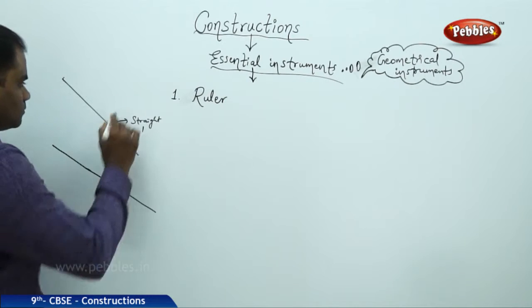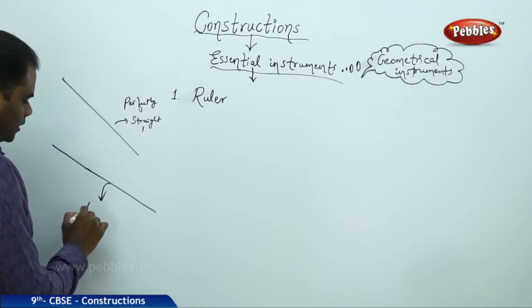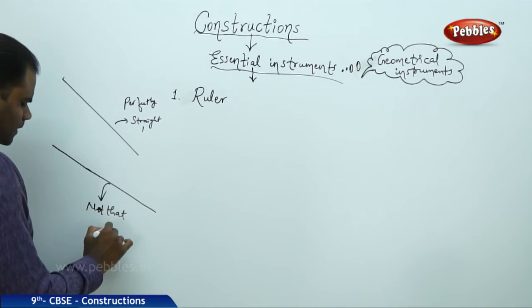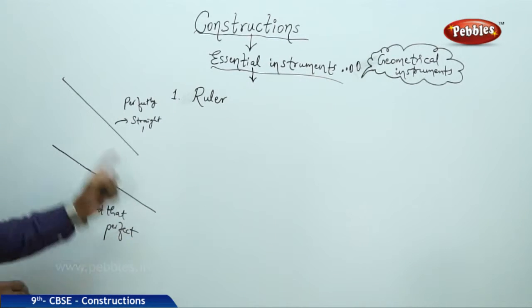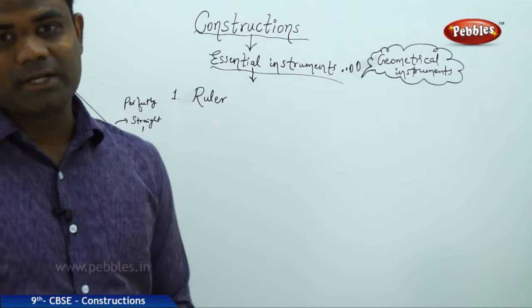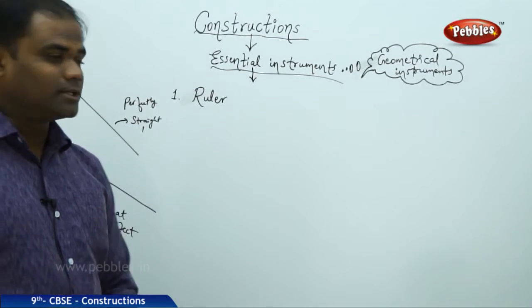But this is said to be perfectly straight and this is said to be not that perfect. Because this is randomly hand drawn and this is drawn through a straight ruler is how we understand the basic introduction of the first essential instrument, which is the ruler.